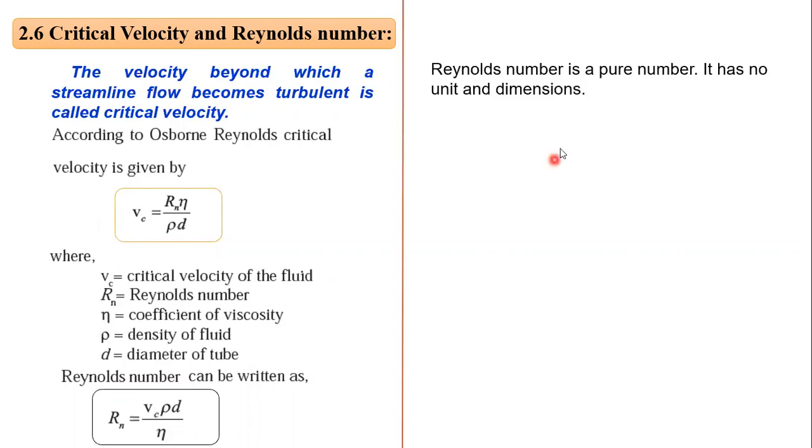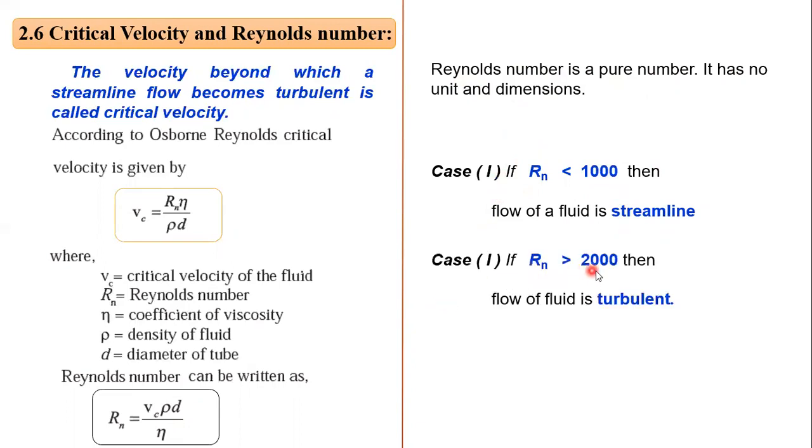Reynolds number is a pure number. It has no unit and no dimensions. Case 1: If Reynolds number is less than 1000, then the flow of liquid is streamlined. Reynolds number decides the type of fluid flow. If Reynolds number is greater than 2000, then the flow is turbulent.